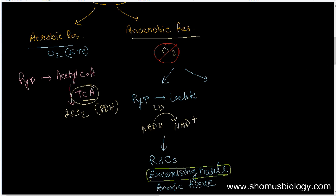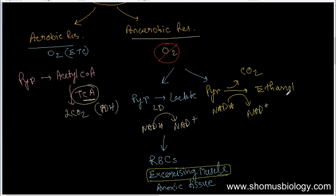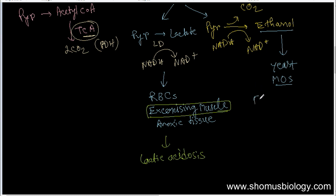The other fate of pyruvate under anaerobic conditions is its conversion into ethanol, also producing CO2 and converting NADH into NAD+. This process is found in organisms like yeast and some other microorganisms. We call it ethanol fermentation, and it is the whole basis of fermentation technology, which gives us many important products in our day-to-day life.